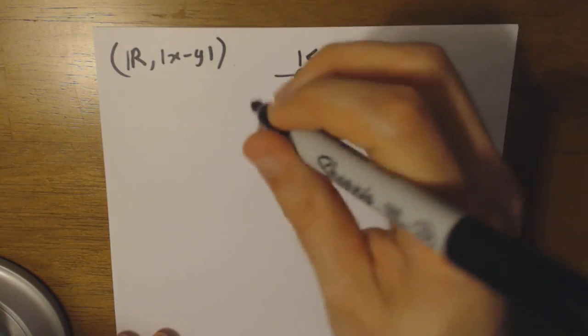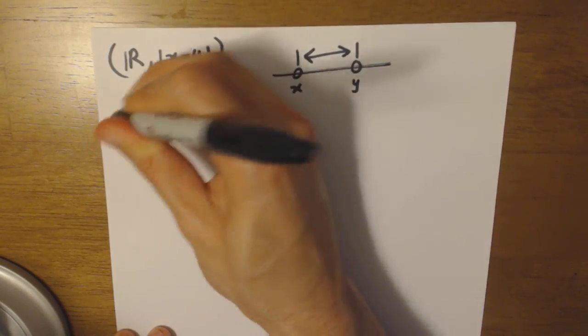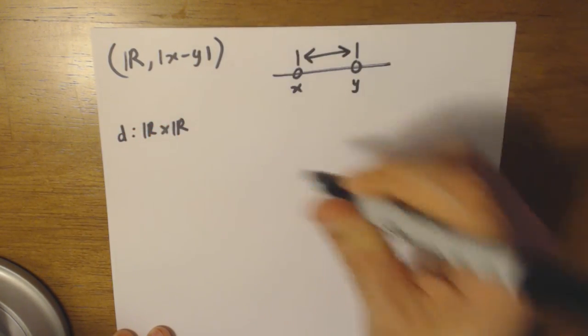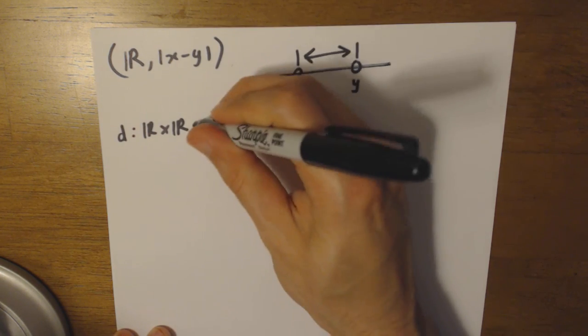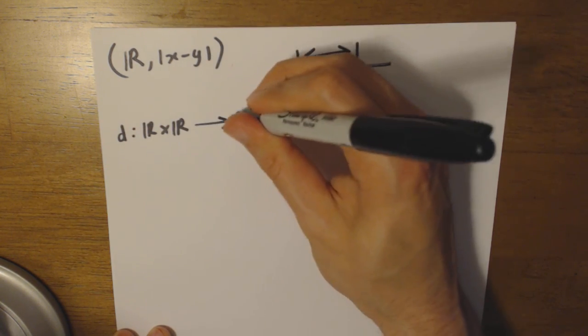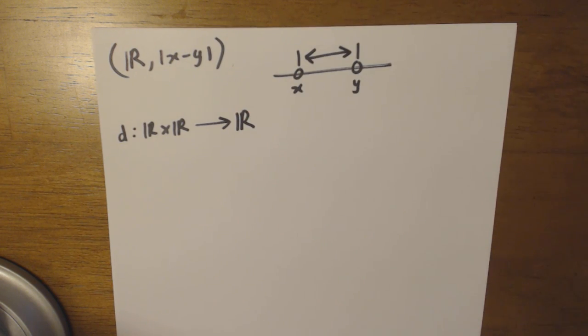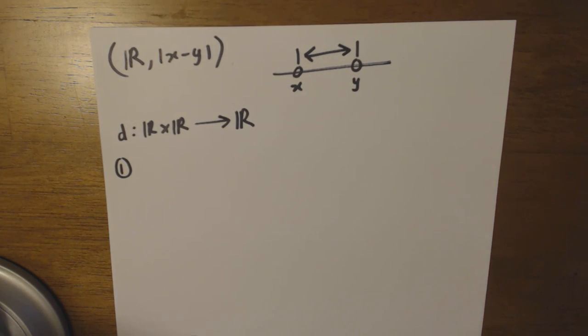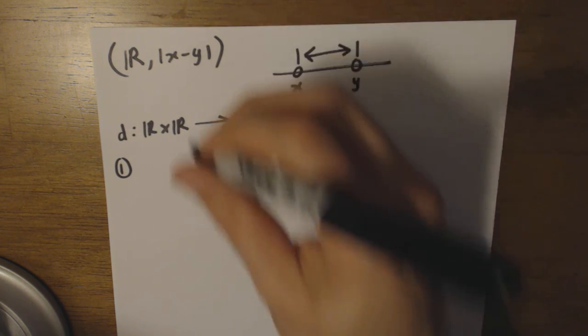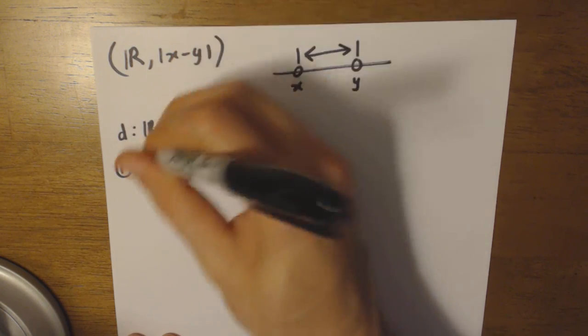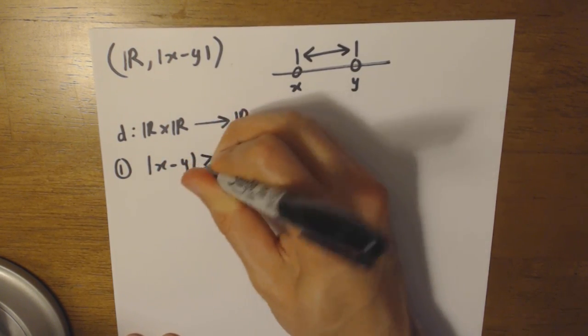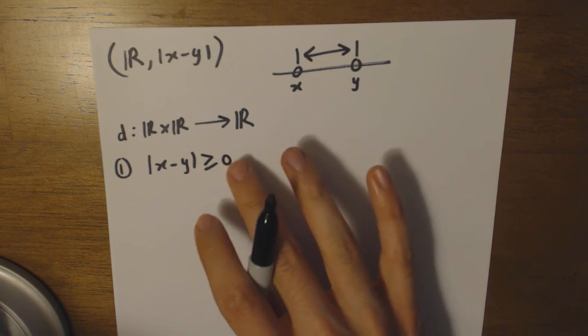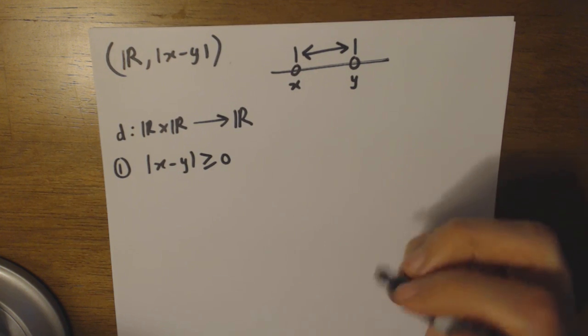Now let's actually prove that this satisfies all the conditions to be a metric. This metric, let's call it d again, maps two points from the real numbers and outputs a real number, the distance. Let's make sure it satisfies the conditions. Number one, positive definiteness: we need that d(x,y), which is |x-y|, should be greater than or equal to zero. That's pretty obvious by the definition of absolute values. This is the case all of the time.